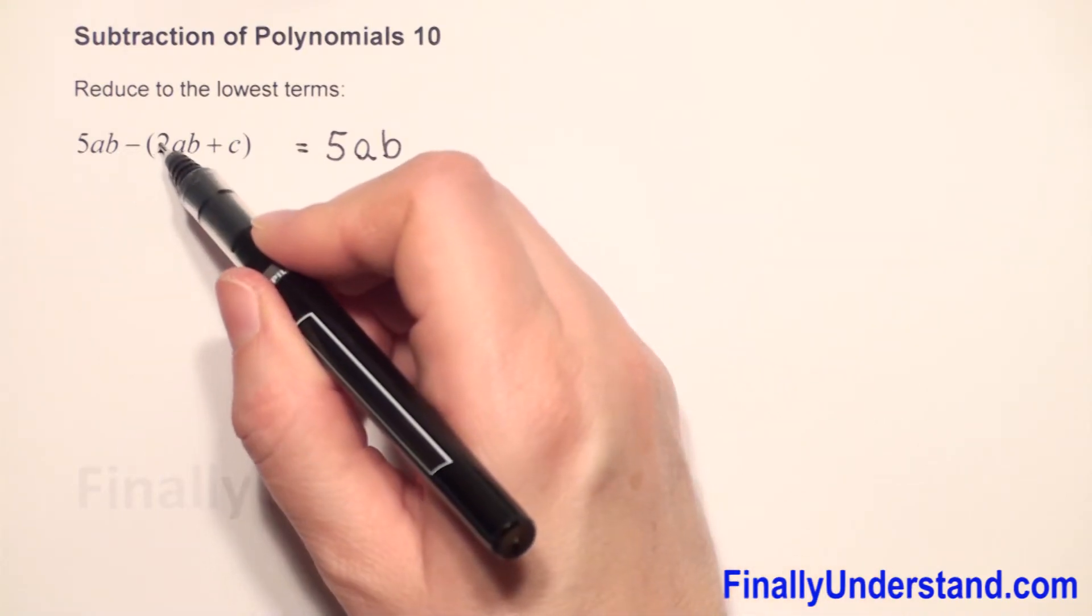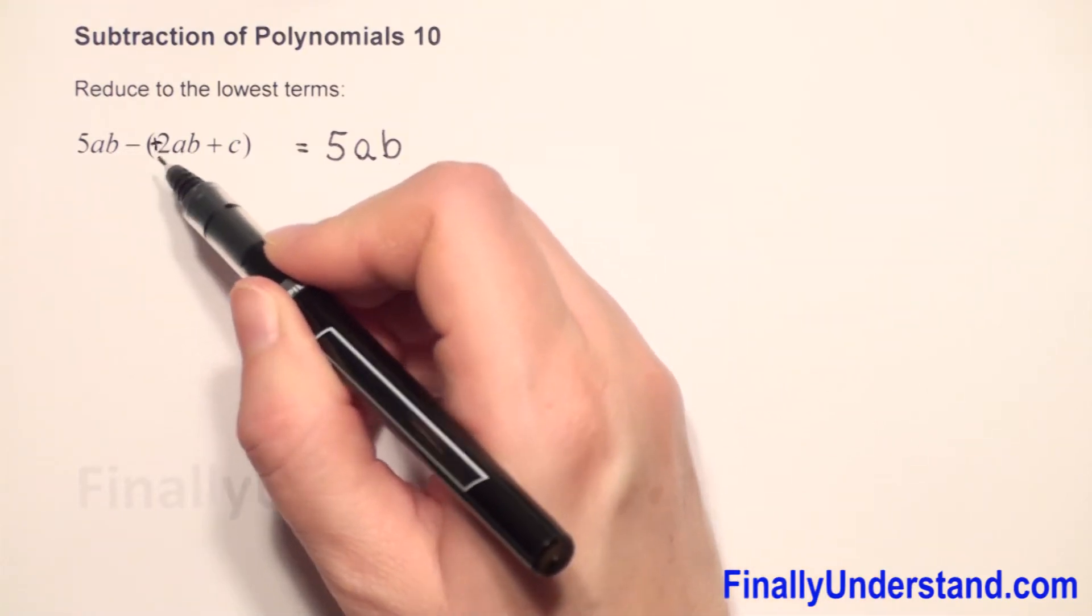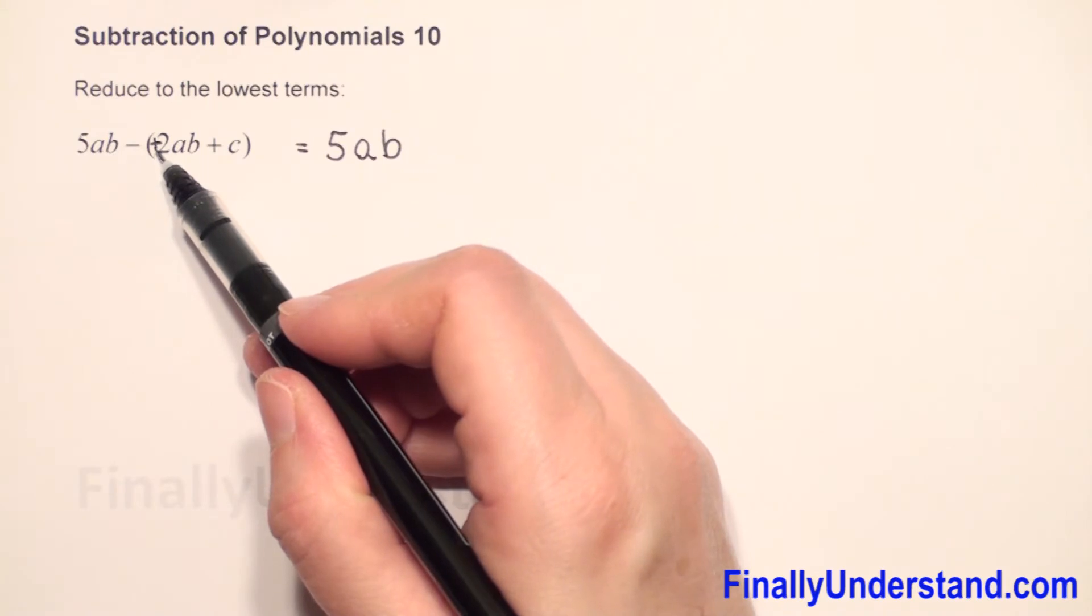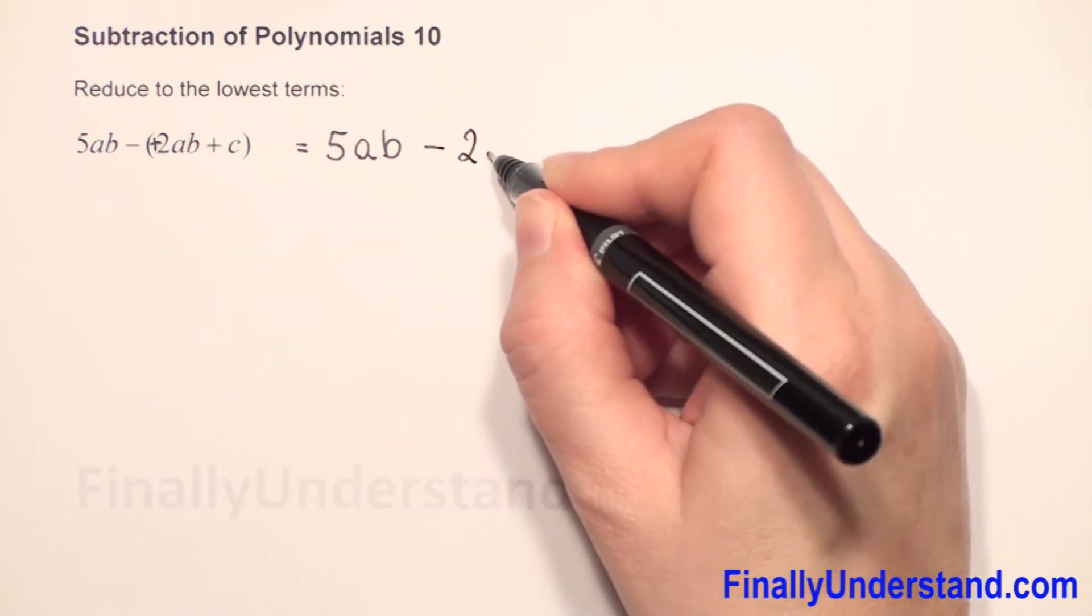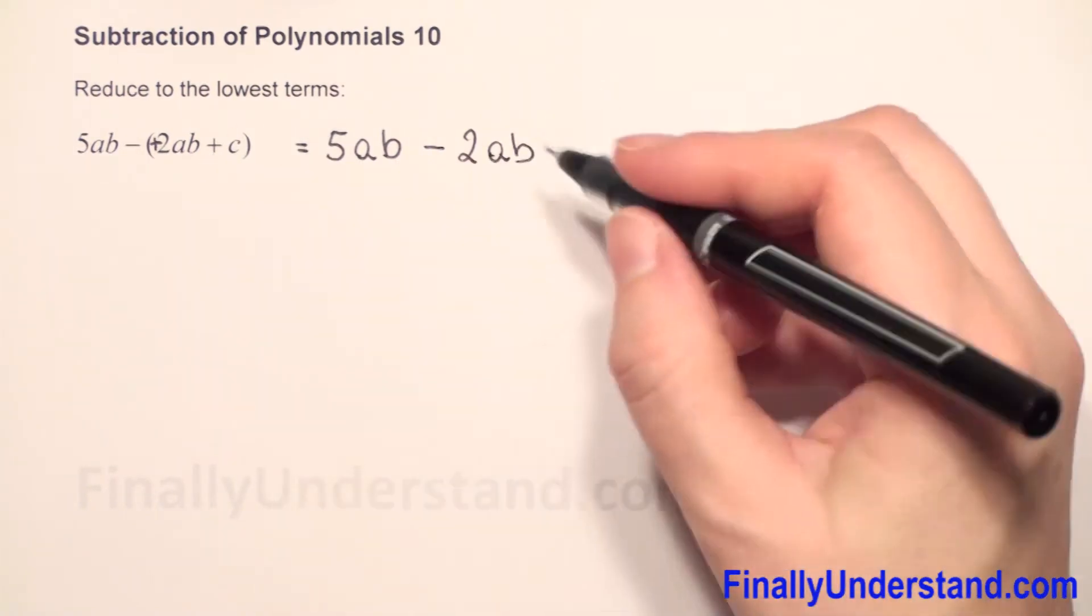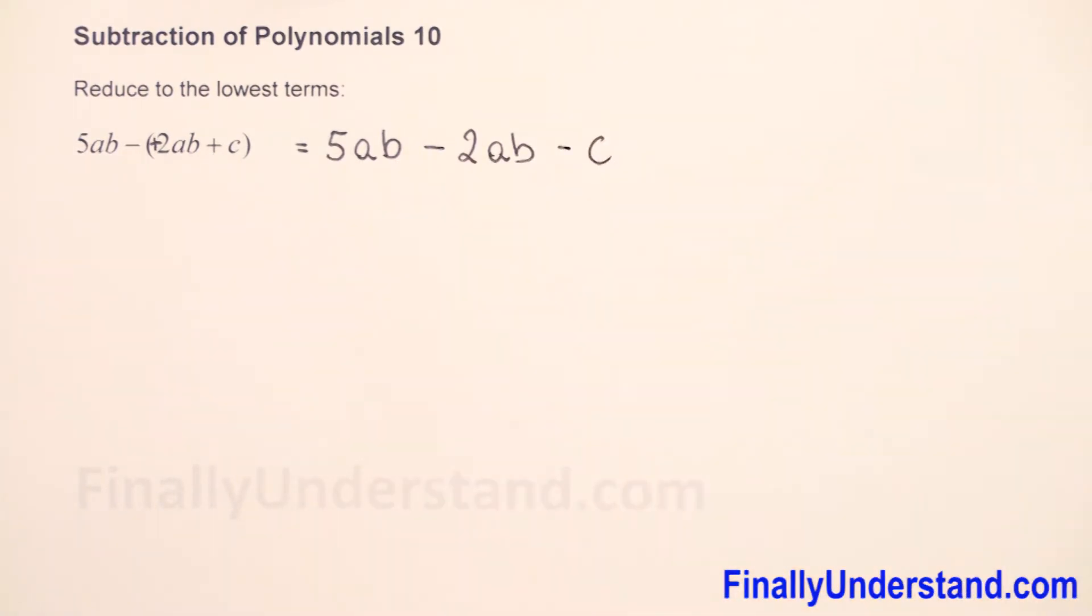When we don't have a sign it means we have here positive. So positive is here, so now it will be negative and we copy 2ab. Positive, so now will be negative and we copy c.